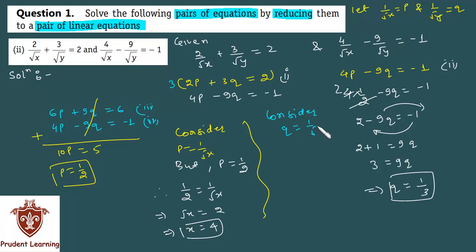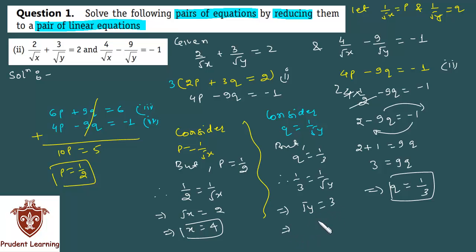Likewise, consider q equals 1 by root y, and we have q equal to 1 by 3. Therefore 1 by 3 equals 1 by root y. On cross multiplying, we get root y equal to 3, and on squaring both sides we get y equal to 9. So the solutions of the given pair of equations are x equal to 4 and y equal to 9. This completes our solution, and let us now move on to the next section of the same question.